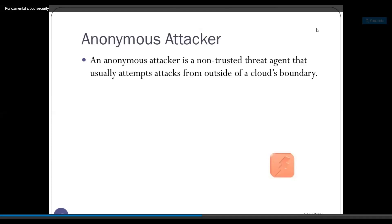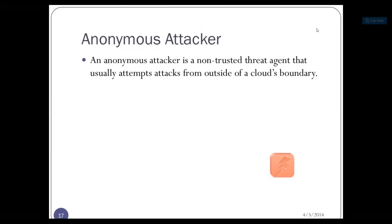Next we are moving to the categories of attackers. The very first type is the anonymous attacker. The word anonymous itself means somebody whom you don't know, coming from outside - you have no idea who they are, where they are from, or which network they belong to. These are non-trusted ones who always attack from outside your cloud boundaries. Like whenever we talk about any cloud, we have a boundary created, and those who are anonymous don't know how to enter that boundary, so they usually attack from outside it. Those are called anonymous attackers.